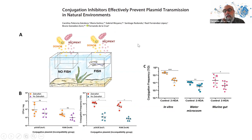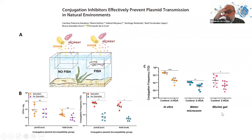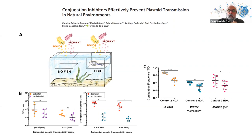We then tested conjugation inhibitors in these settings to see if they reduce conjugation frequency. We found that in the water ecosystem, conjugation frequency is reduced with the inhibitor present. We also did analogous experiments in mice. This demonstrates that conjugation frequencies can be measured by several methods under different conditions.